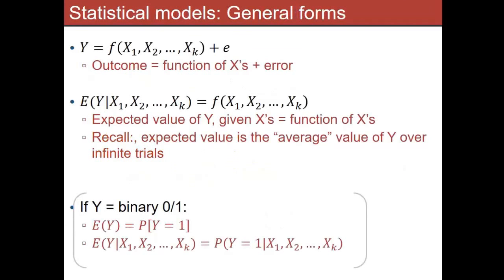We've got to wind up talking about the logistic model. The logistic model is a specific statistical regression model that really looks a lot like others — it's just one of many types. The name of the game of all statistical models — linear regression, logistic regression, survival analysis, and so forth — is that you're taking a function of a bunch of X variables you measured: sex, age, antimicrobial use, and you're feeding your data into this function, which you think is predicting the outcome.